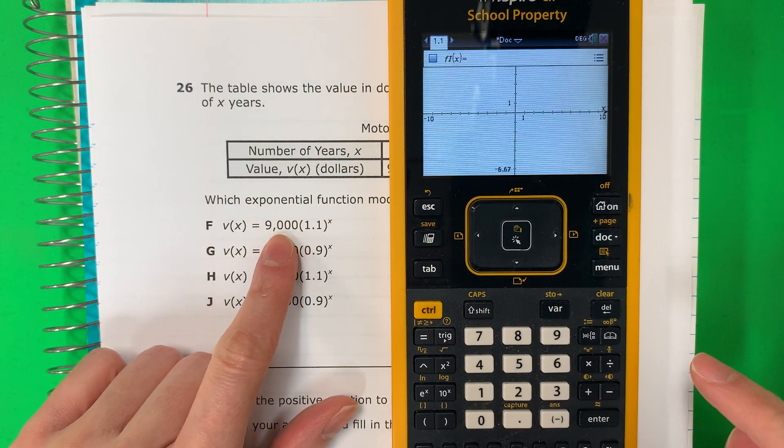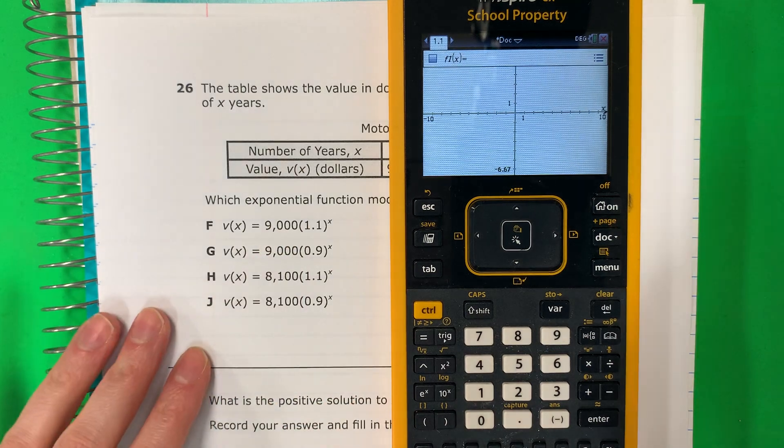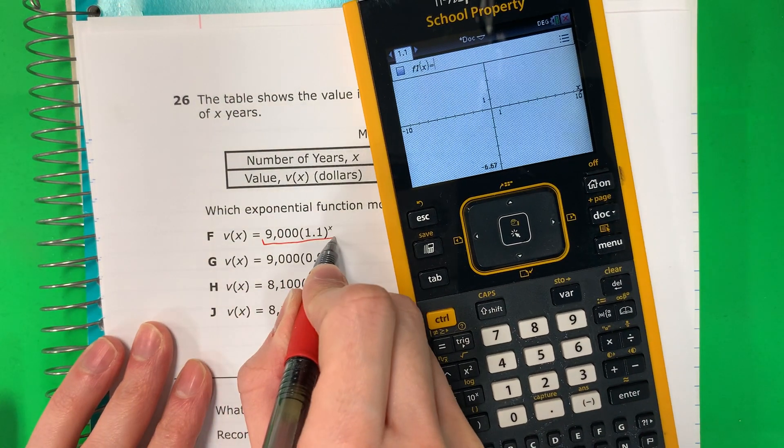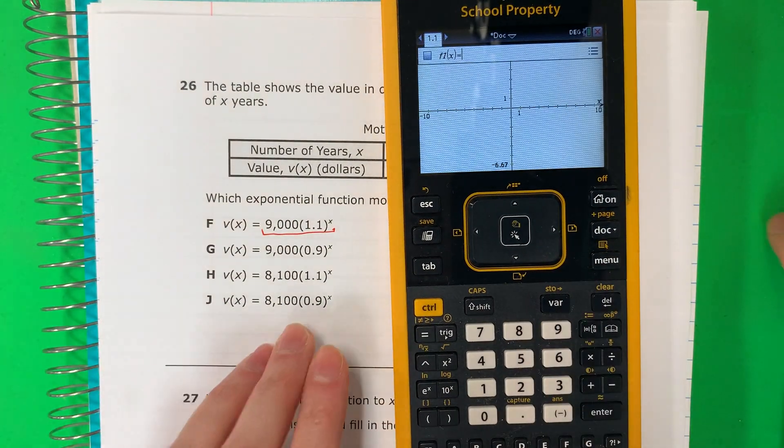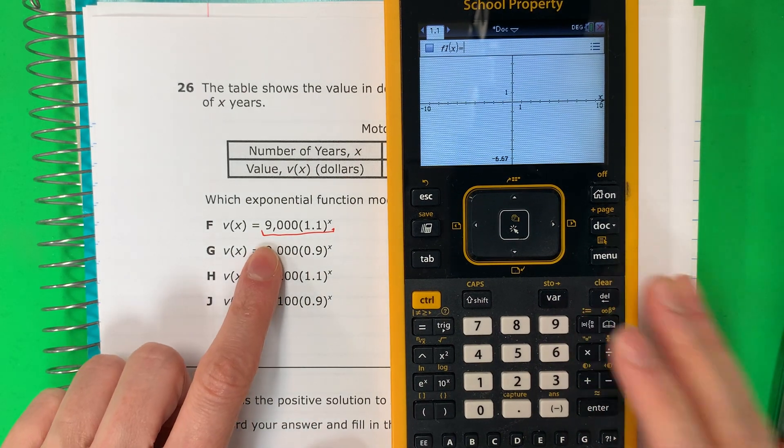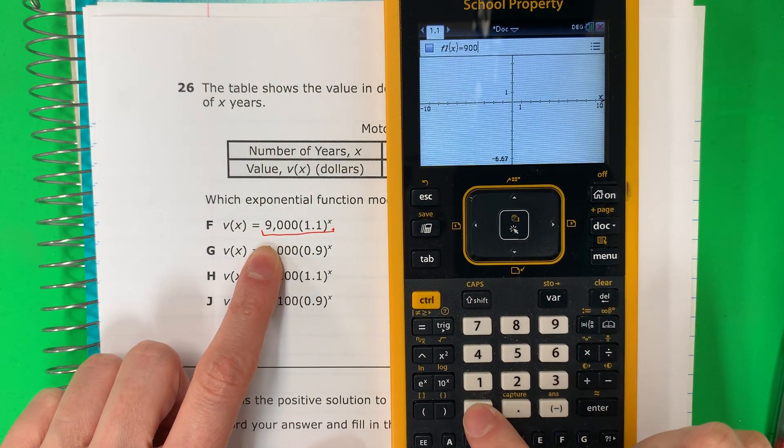Okay, we're going to go ahead and go one by one. Vamos uno por uno. So you're only going to put the right side. Solo voy a poner el lado derecha. Okay, so you're going to go ahead and put 9000.